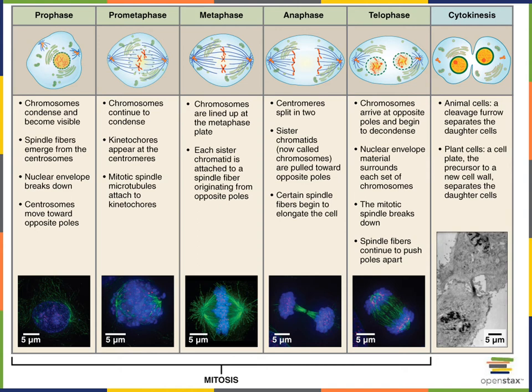Chromosomes will be lined up with one sister chromatid attached to a mitotic spindle on each side of the cell. The centrosome is located on two poles of the cell, and the microtubules are radiating towards the midline, attaching to a sister chromatid on either side of each chromosome.